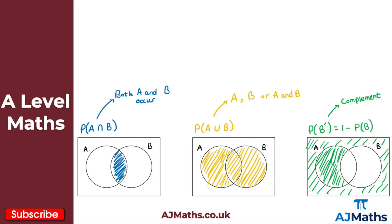So those are the three bits of notation you need to be familiar with: the intersection, the union, and the complement. That gives us everything we need for our introduction to Venn diagrams. Now let's take a look at some practice questions.